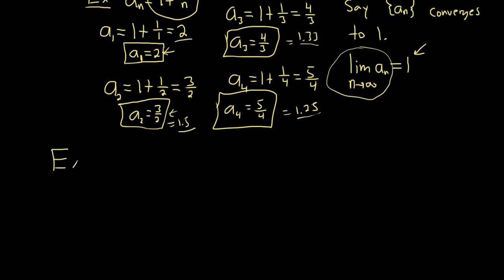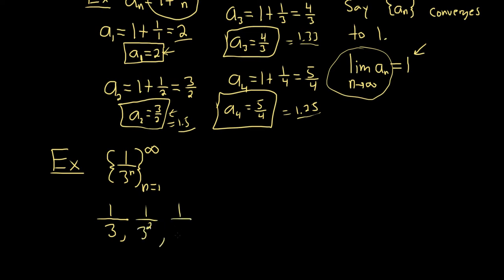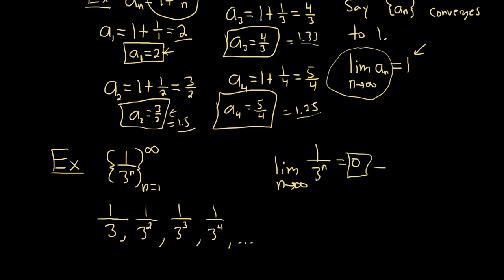Let's look at another example. We have the sequence 1/3^n starting at n = 1. The first few terms are 1/3, 1/3², 1/3³, 1/3⁴, and so on. You can see that the terms get closer and closer to 0. If you take the limit as n goes to infinity of 1/3^n, you get 0. So this is the limit of the sequence, and we say the sequence converges to 0.